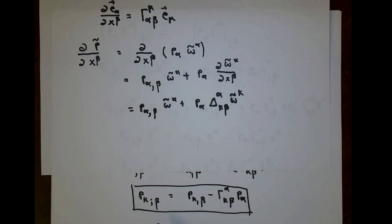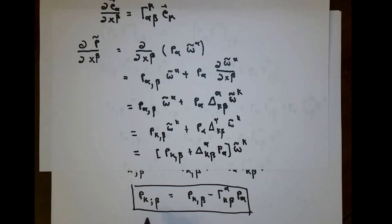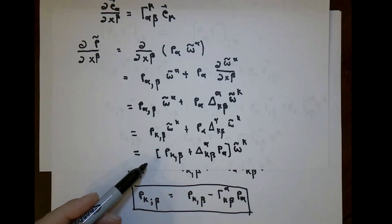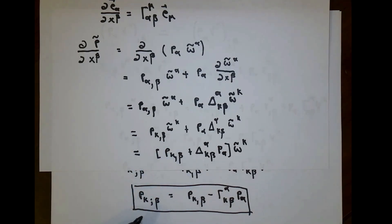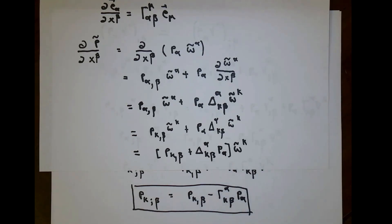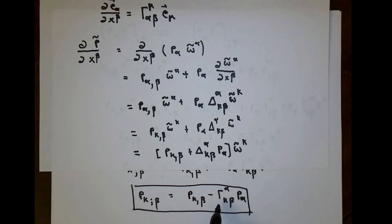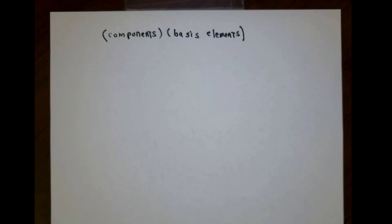Comparing this result with a rewritten version of what we had before, we see that p_{κ;β} should be p_{κ,β} plus δ^α_{κβ} p_α, all summed over. But what we've figured out from the product rule is that the coefficient works out such that we conclude δ^α_{κβ} is just the negative of the Christoffel symbol with the same indexes.